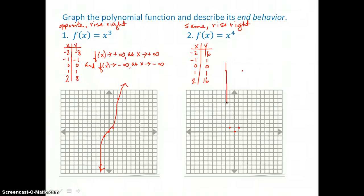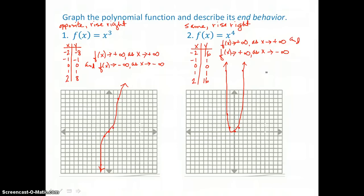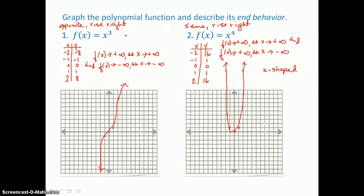When I connect these points, I see that this graph is rather U-shaped, like a parabola, which is also even degree. When I describe its end behavior using function notation, I would say f of x approaches positive infinity as x approaches positive infinity, and f of x approaches positive infinity as x approaches negative infinity. Even degree functions look rather U-shaped, and odd degree curves are S-shaped.